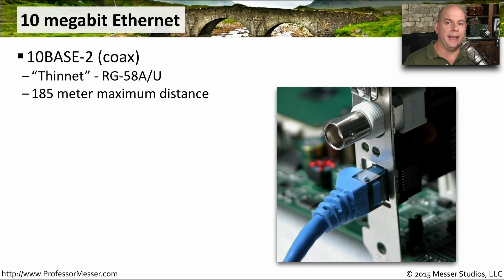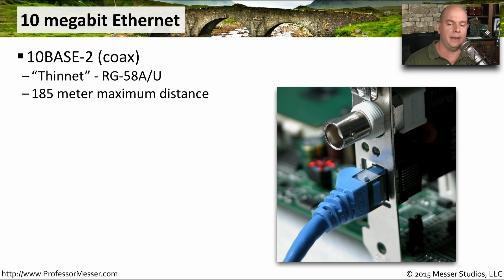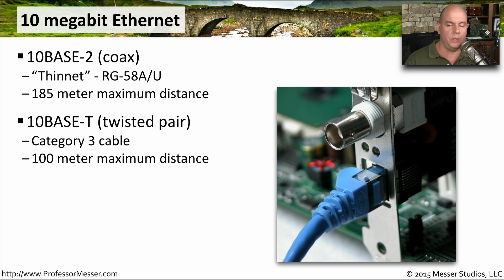The early days of Ethernet ran at 10 megabits, and there were a number of standards around those. One of the earlier standards was 10Base2, which was Ethernet over a coax connection. It was a very thin type of coax, so we called it thinnet. It was an RG58A/U cable, and it gave us the ability to extend Ethernet to a 185-meter distance. We then updated to twisted pair copper with the 10BaseT standard, which uses Category 3 cable at a minimum and allows Ethernet signals up to 100 meters in distance.